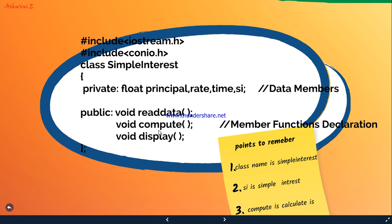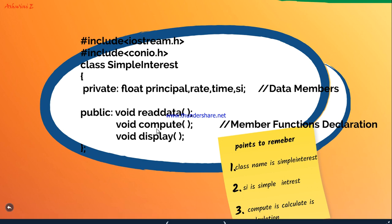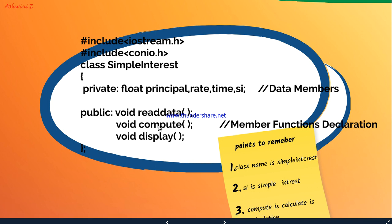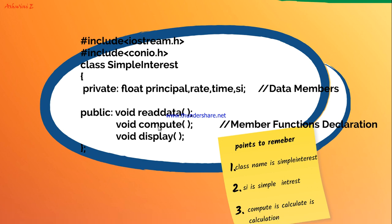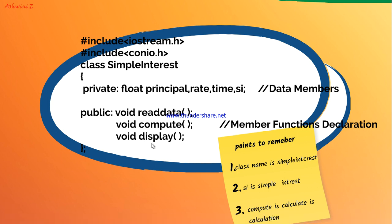Next are the member functions: read data, compute, and display. In read data you will read the values for principal, rate, and time. In compute you will calculate: simple interest = (principal × time × rate) / 100. In the display function you will display the simple interest value after calculation.